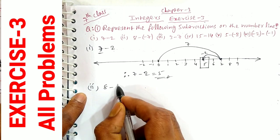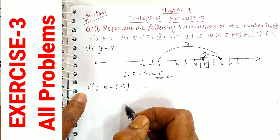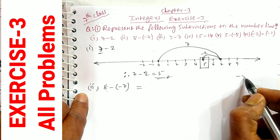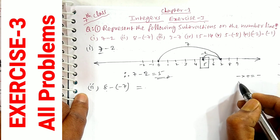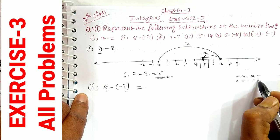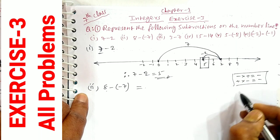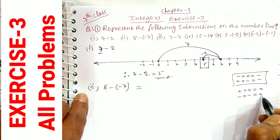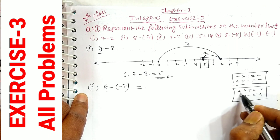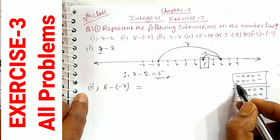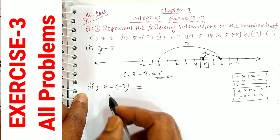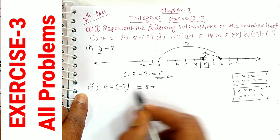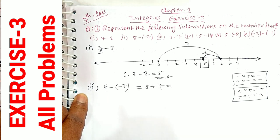Second part: 8 minus of minus 7. We have already explained the sign rules — minus into plus equals minus, plus into minus equals minus, plus into plus equals plus, minus into minus equals plus. So here 8 minus into minus gives plus, meaning 8 minus (-7) becomes 8 plus 7.